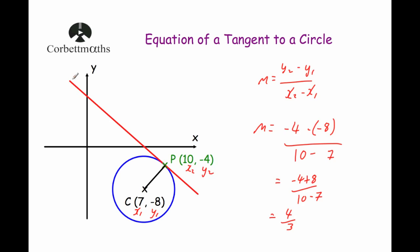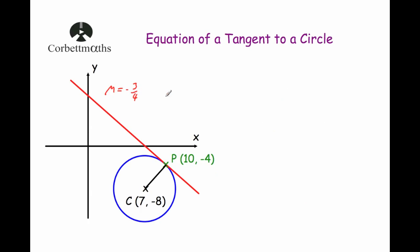Since the tangent and radius are perpendicular, the gradient of the tangent L is the negative reciprocal of 4/3, which gives us −3/4.